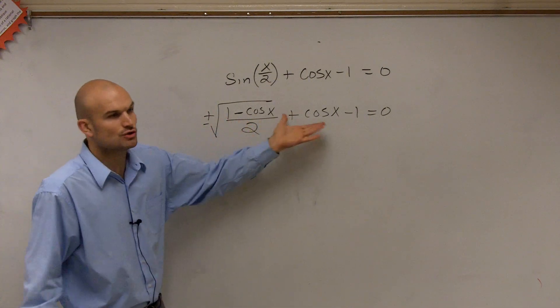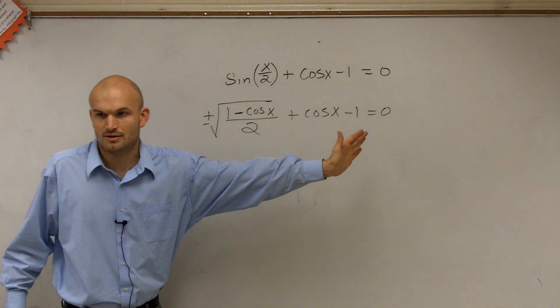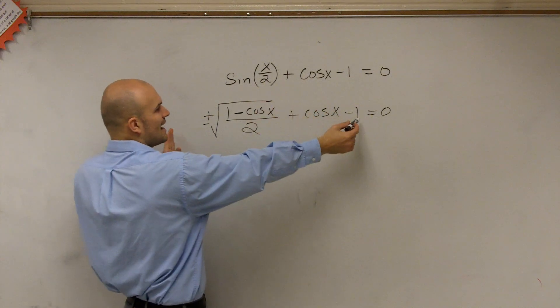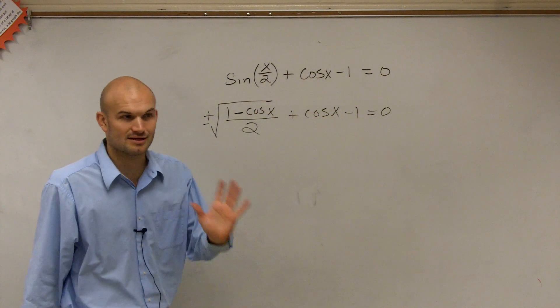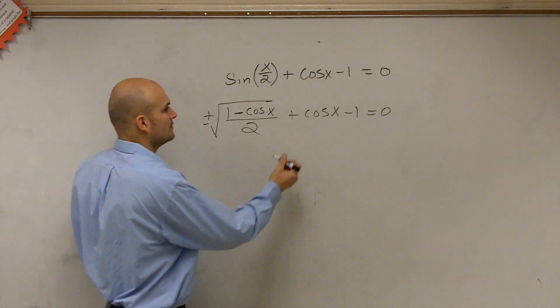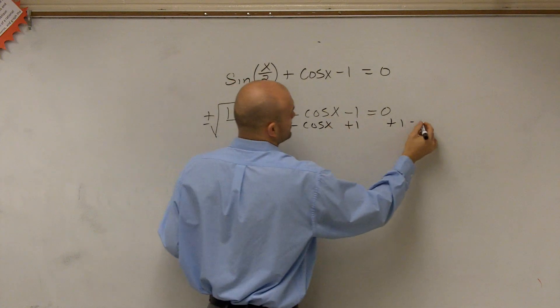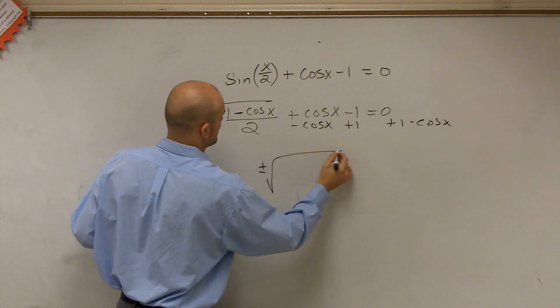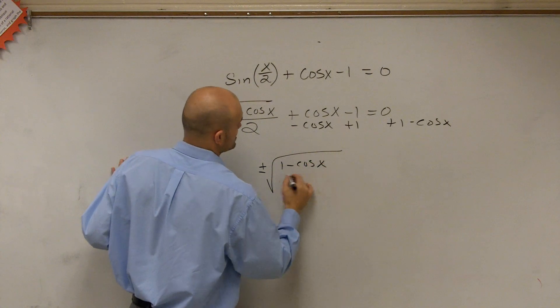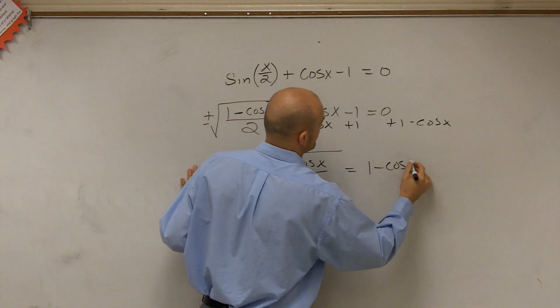So here, I don't want to square to get rid of this yet because I've got to get this stuff to the other side. If you look to squaring this side, you have a trinomial now that you have to foil. And that's going to be way too much work that I want to deal with right now. So what I would do is I'd add 1 to both sides and I'd subtract cosine of x on both sides. Now I have plus or minus the square root of 1 minus cosine of x divided by 2 equals 1 minus cosine of x.